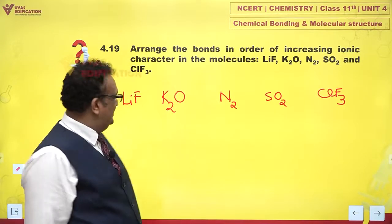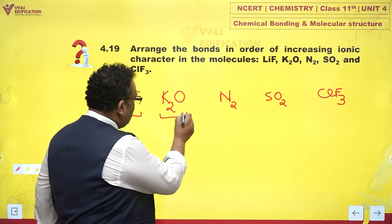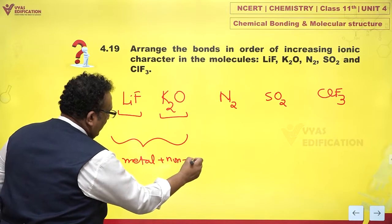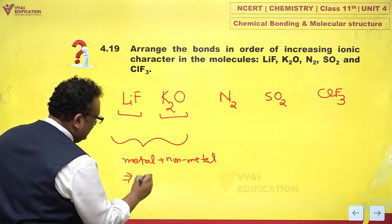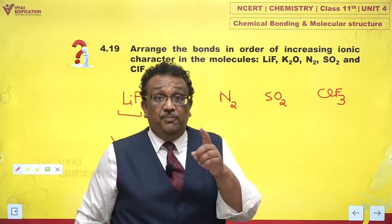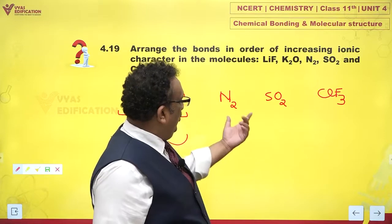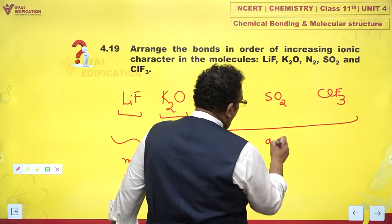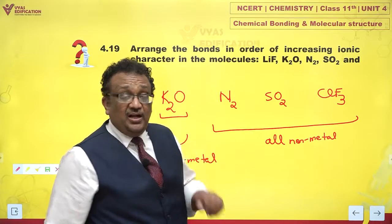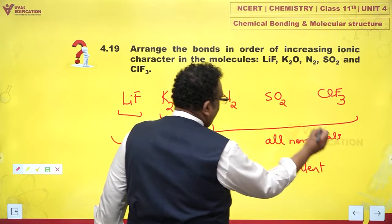If you notice, LiF has metal and non-metal, and K₂O also has metal and non-metal. Metal plus non-metal means ionic bond, so these two bonds are predominantly ionic. N₂, SO₂, and ClF₃ are all non-metals, and when non-metal atoms combine with each other, the bonding is predominantly covalent.